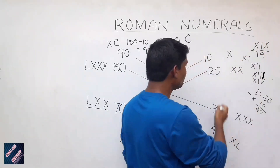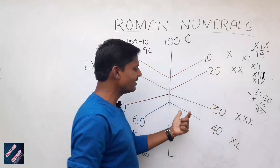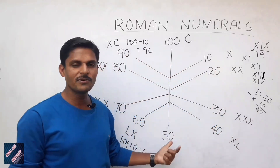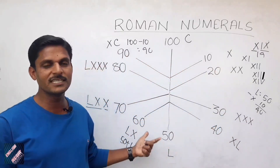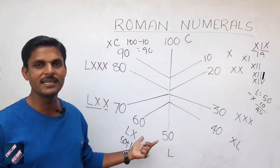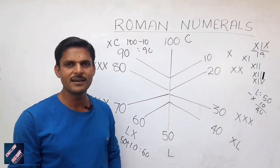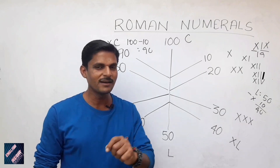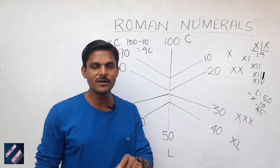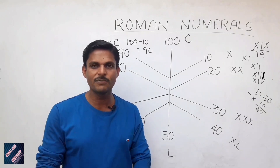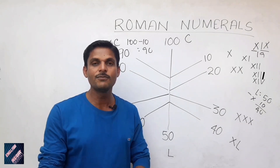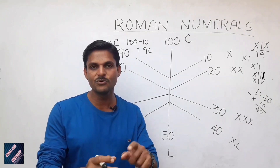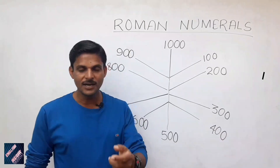And we have written 20, 30, 40, 50, 60, 70, 80, 90, 100. Now we will see how — 100, 200, 300, 500 — up to 1000 we can easily remember. Okay?